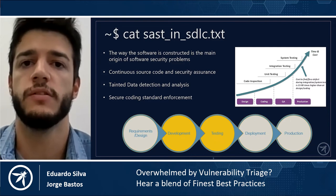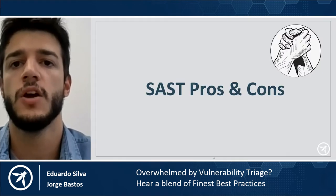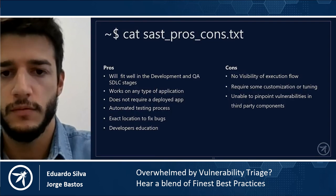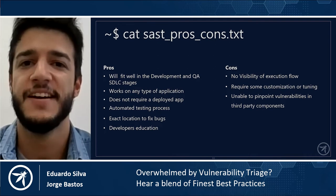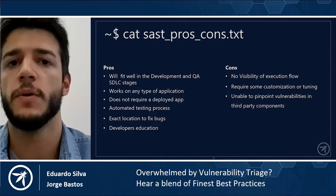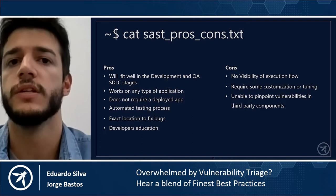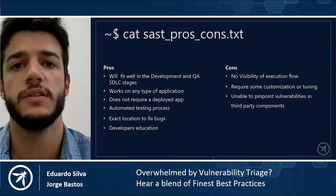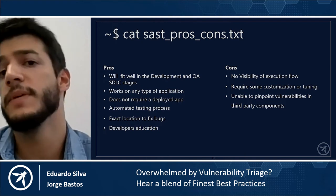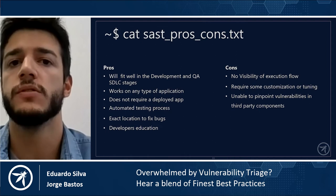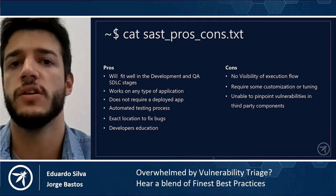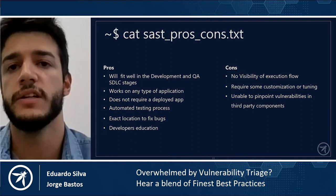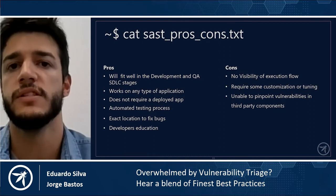Now that we understand SAST's position over the other two methodologies and its role in the SDLC, we can sum up its strengths and weaknesses. Starting with the bad news: out of the box, most SAST tools produce thousands of false positives on an average-size application, requiring some customization — mainly by tuning the query rules of your SAST tool to your application's environment. Also, as a standalone solution, most SAST tools available do not pinpoint vulnerabilities found in third-party components. However, this can be mitigated by adding additional modules or software which looks for vulnerabilities in libraries. Another disadvantage of SAST is that it has no visibility of the execution flow, and thus is not capable of identifying vulnerabilities in runtime environments.